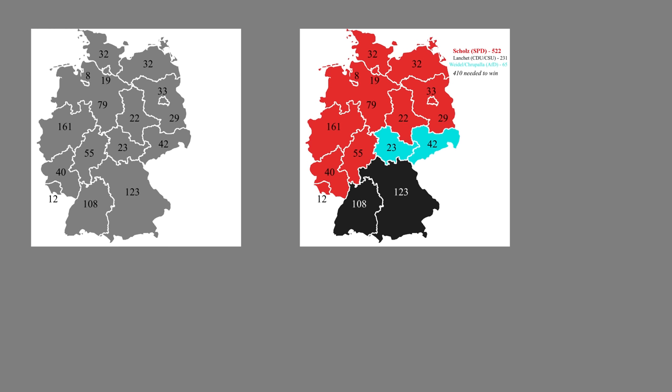Germany. For Germany, their electoral map would look like this. Since Germany has even more parties that win Bundestag seats, vote splitting would strike and give Schultz quite a victory. I also assume that since the CDU and CSU always coalition together that they would just run a single joint candidate.